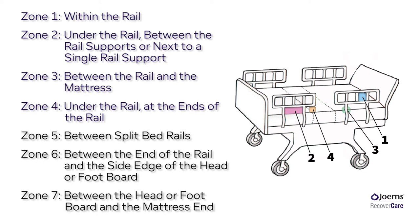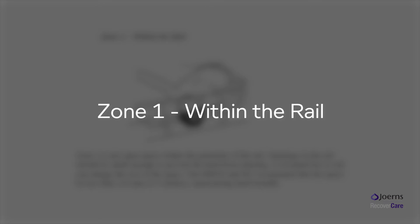Zone 7 – Between the head or footboard and the mattress end. Note that although there are seven zones listed, only zones 1 through 4 are required zones. The FDA continues to monitor entrapments in zones 5 through 7 and will issue further guidelines. With that in mind, all seven zones should be considered when evaluating a bed system for resident safety.